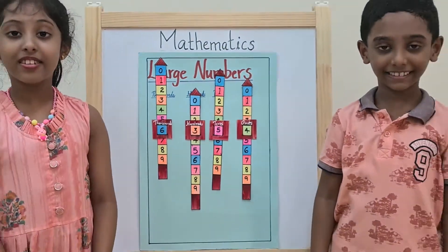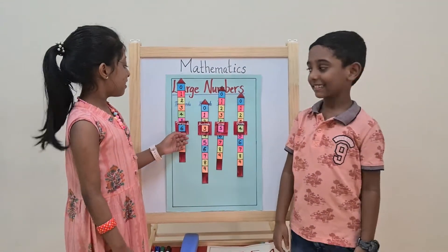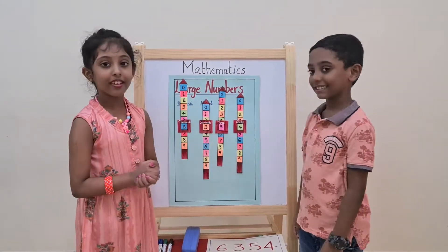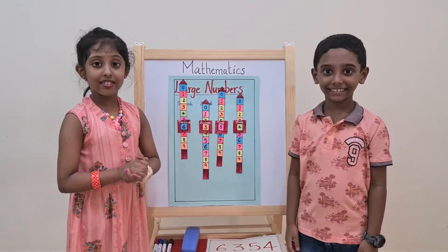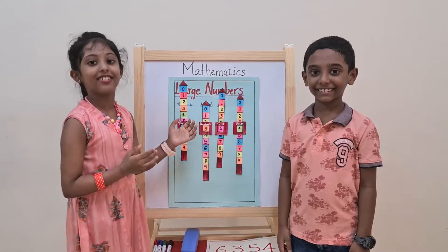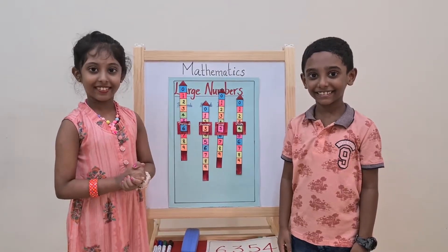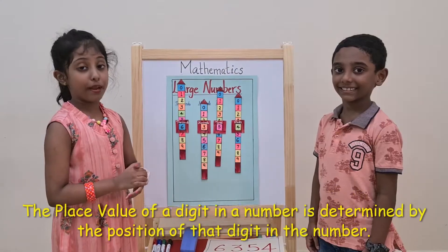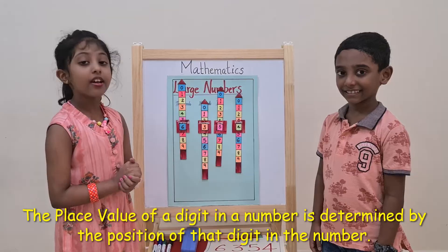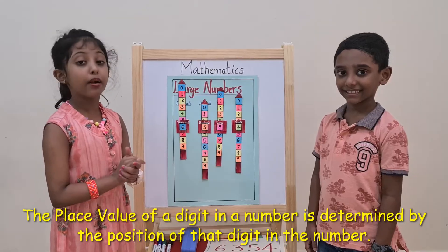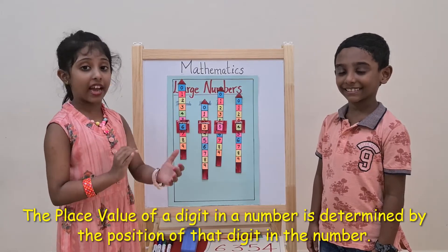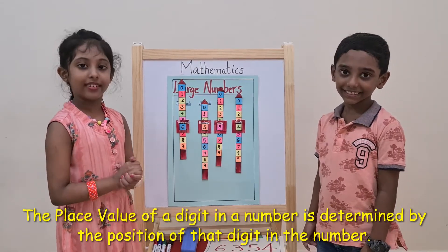We have selected 5334. You can select any four digit number using the place value chart. The place value of a digit in a number is determined by the position of that digit in the number.